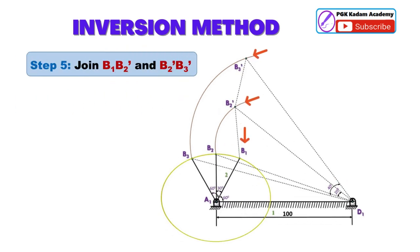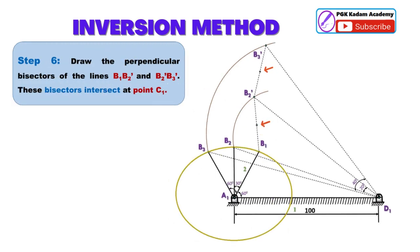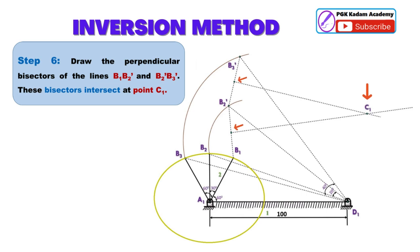Step 5: Join B1B2 dash and B2 dash B3 dash. Step 6: Draw the perpendicular bisectors of the lines B1B2 dash and B2 dash B3 dash. These bisectors intersect at point C1.